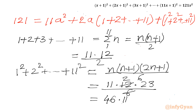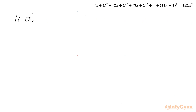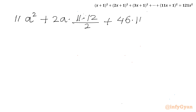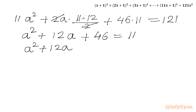Substituting back: 11A² + 2A×66 + 506 = 121, which simplifies to 11A² + 132A + 506 = 121. Dividing the entire equation by 11: A² + 12A + 46 = 11, giving A² + 12A + 35 = 0.